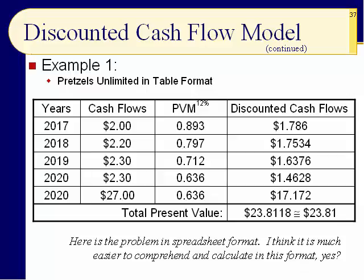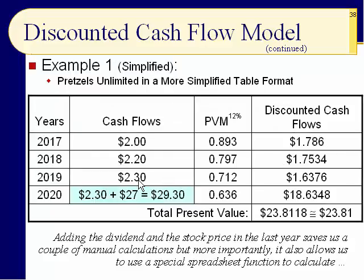Now we're going to take the two calculations in 2020 and put them together — combining the $2.30 dividend and $27 expected price into a single cell in our spreadsheet. This saves a couple of multiplications and additions, but more importantly it allows us to use a special spreadsheet function that those who have gone before you, dear students, know well.